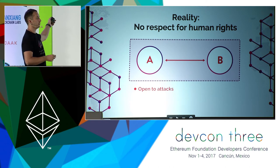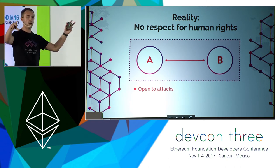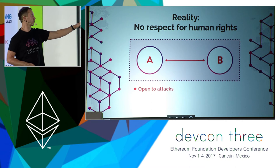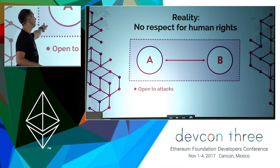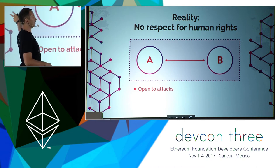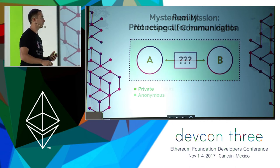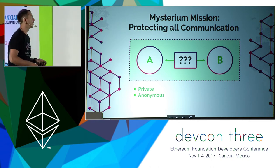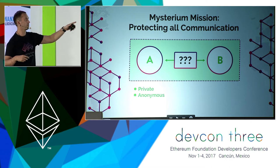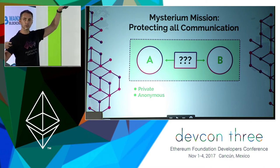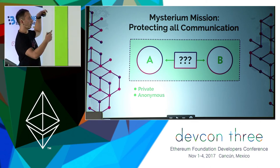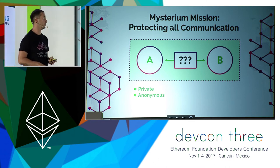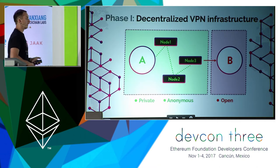So the question is: is it even possible to protect this channel between two entities? Those two entities can be anything — a device talking to a server, app to app, app to server, server to server. Protecting the identities of these two entities would mean anonymity, and protecting the content of the communication happening between them would mean privacy. We believe it is possible, and that's what we've set out as our mission — to protect identities and content so that no unauthorized third party could see who is talking or understand what they're talking about.